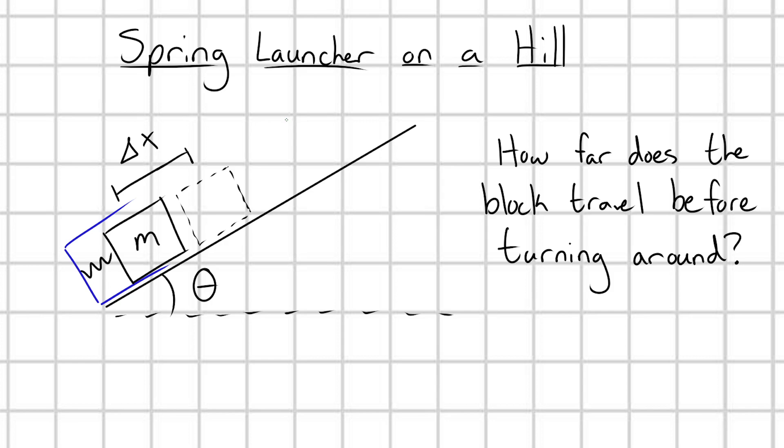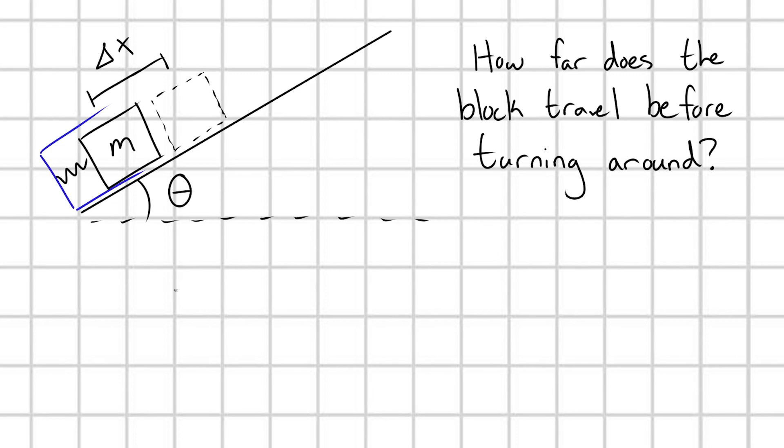But first off, why can we use conservation of energy? Well, let's quickly think about the forces at play throughout the problem. First, we're going to have our Hooke's Law spring force when we're actually compressing the spring. We're going to have gravity acting throughout the problem, mg, and we're going to have normal forces due to the contact of the block with the hill.